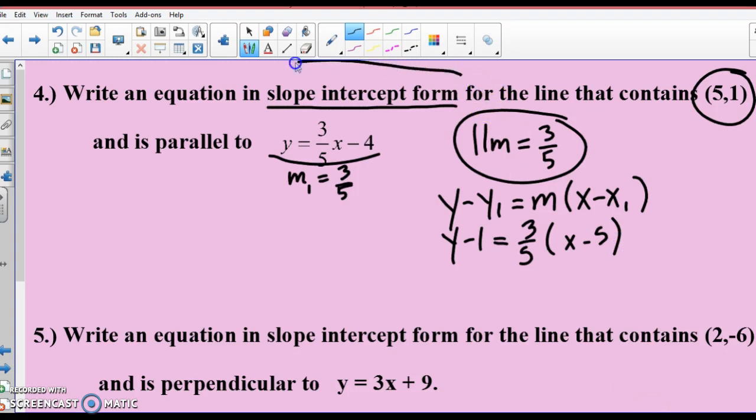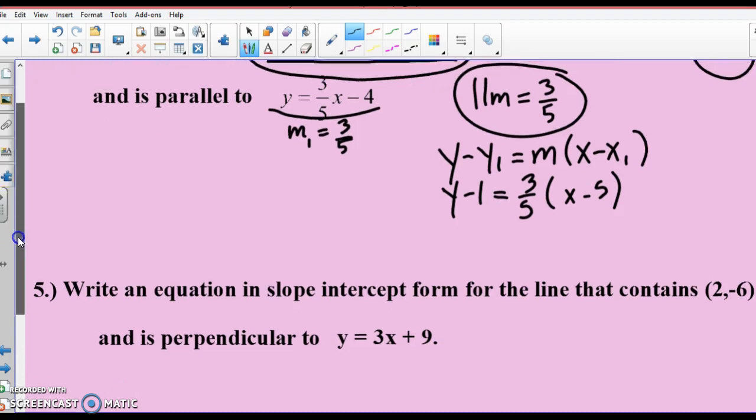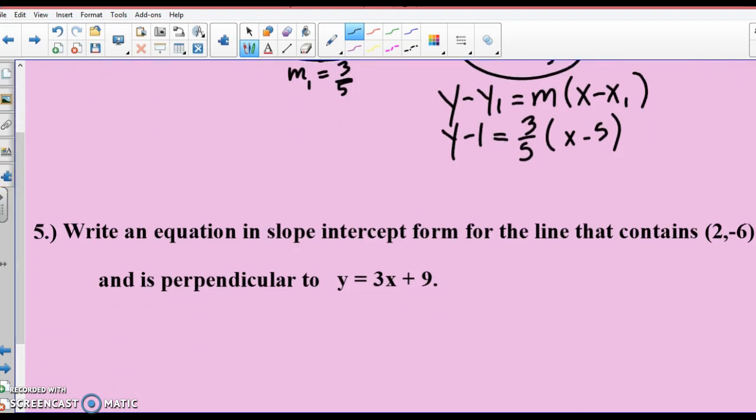Now, are we done with this problem? No, because look. It said they want your answer in slope-intercept form. So, what do I need to do here to transform into one? We need to distribute. Y minus 1 equals 3/5 x minus 3. How do I finish getting into slope-intercept? So, y equals 3/5 x minus 2.